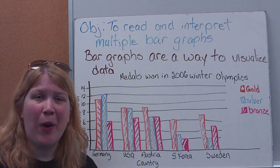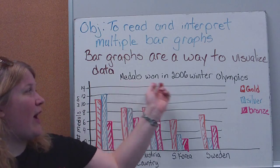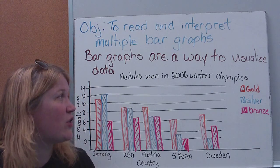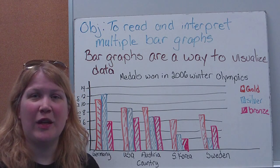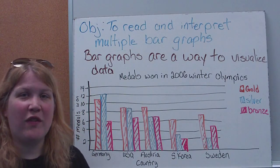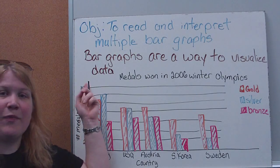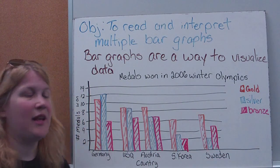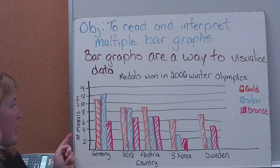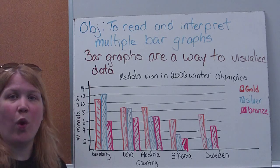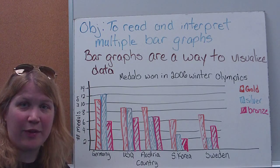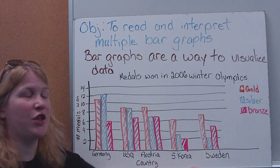Let's quickly review parts of a graph. All your graphs should have a title. This graph's title is 'Medals Won in the 2006 Winter Olympics' — very self-explanatory; you know exactly what information is on the graph. Then you have a couple of different axes: a y-axis and an x-axis, and you need labels for each. The y-axis tells me the number of medals won, and the bottom tells me the country.